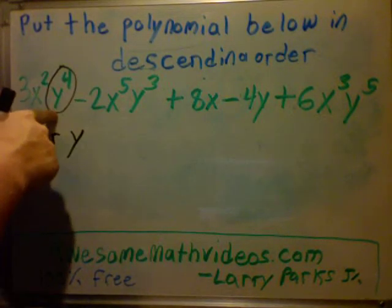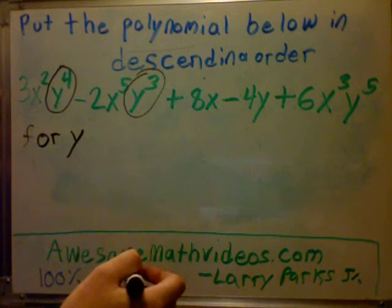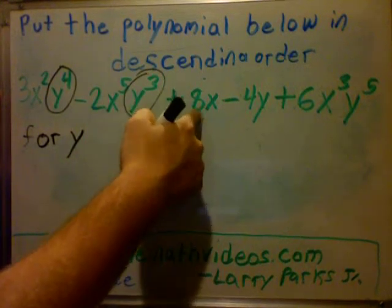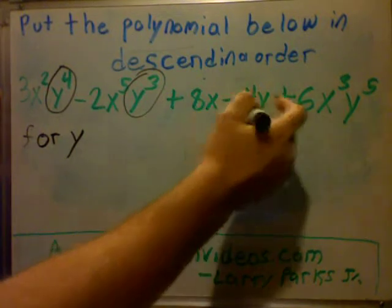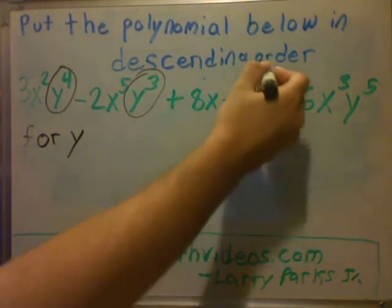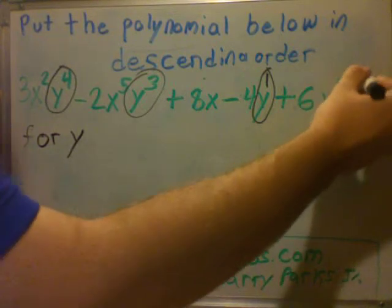So I got four y's in this one, I have three y's in this one, no y's, how many y's? One. So I got one y, and then here I have five y's.